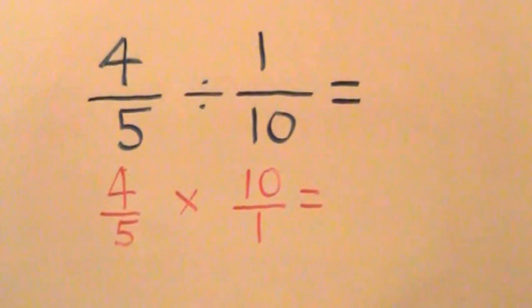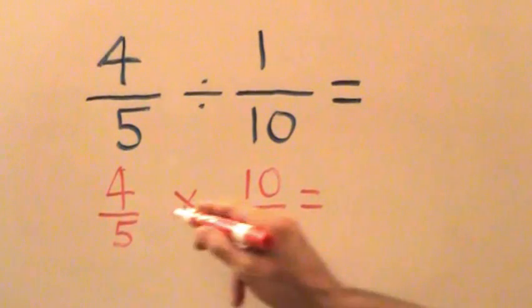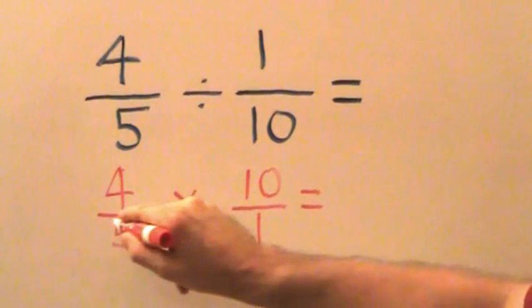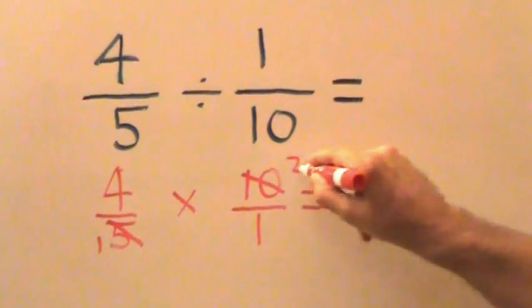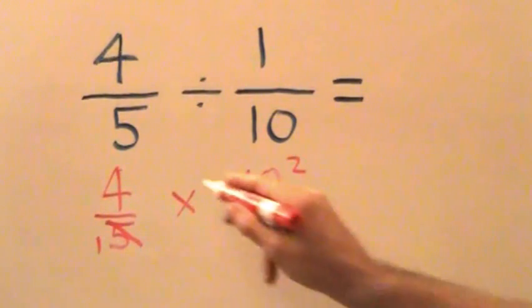Next we check to see if we can cross-cancel. In this case we can. Five is a factor of ten. Five goes into itself once. Five goes into ten two times. Next we multiply across.